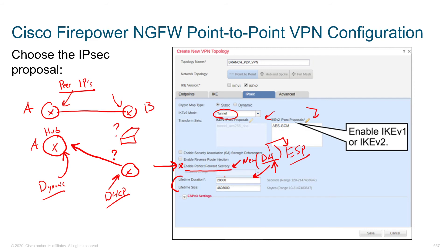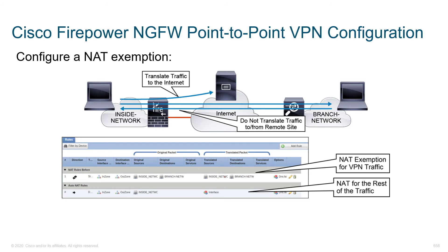NAT exemption configuration looks a bit different from what you saw on the ASA, but we're doing the same things. We're defining what the packet looked like when it came in and what it looks like when it leaves. If we don't want to translate the source, we say the packet came in looking like this and went out looking exactly the same. For other traffic not headed to a branch office, we translate the inside network to the IP address of our outside interface.